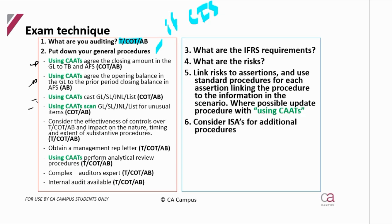There's also a management representation letter, which is a manual procedure — I still need to put that down even if they have a computer information system, because I still need to perform my manual procedures. Using CATS, do your analyticals. Then consider what the assertion requirements are, what the risks are, link your risks to your assertions, and where possible use CATS for those examples of procedures under each assertion.